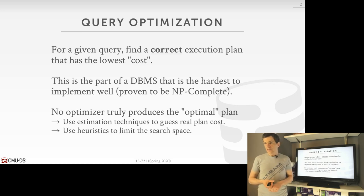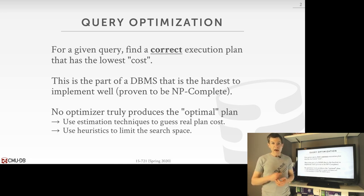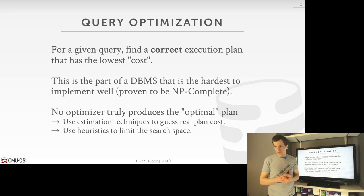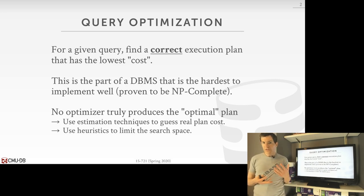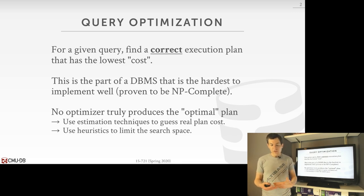The two words I'm emphasizing here are correct and cost. Correct is kind of obvious — it doesn't help us if we find a really fast plan that ends up computing the wrong answer. And the term cost is in quotes because it's a relative metric not necessarily tied to a real-world metric; it's just something the database system uses to say this is the best query for me to execute.